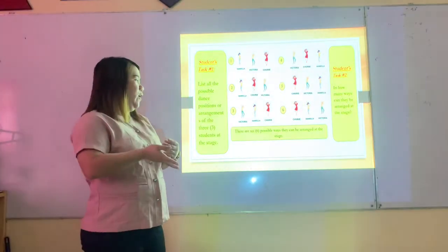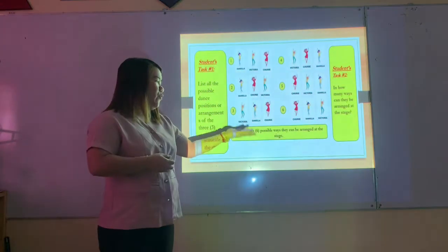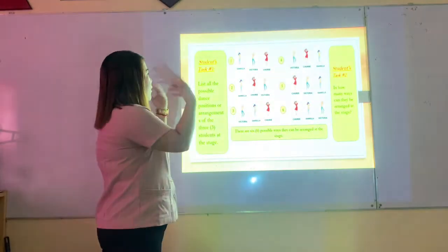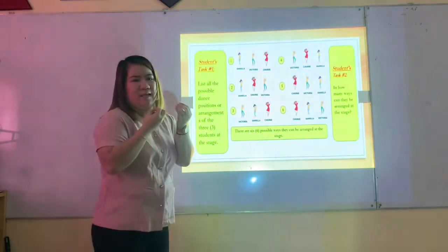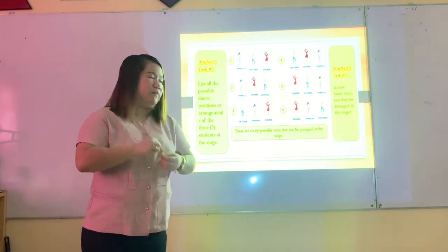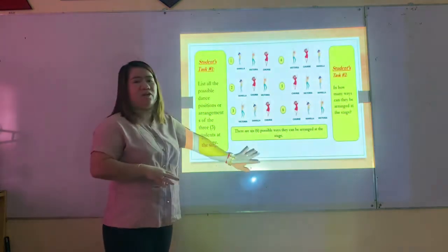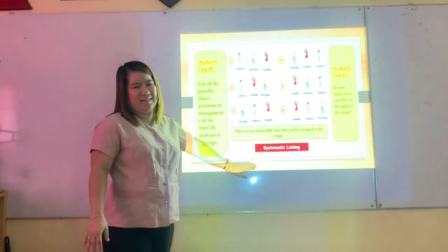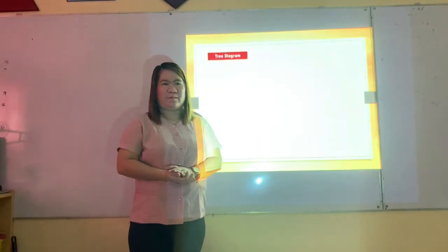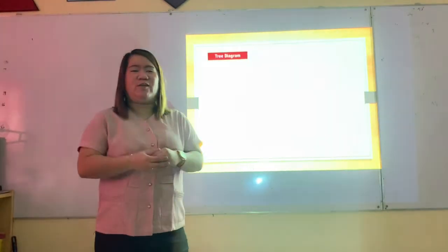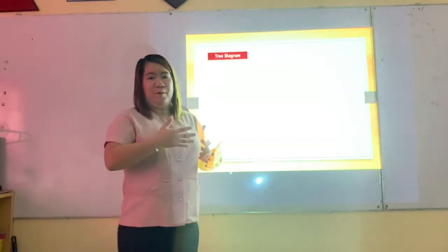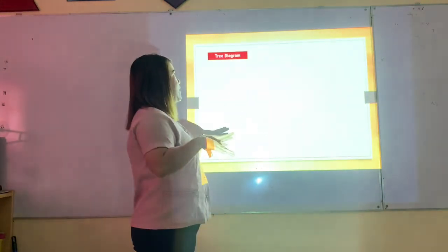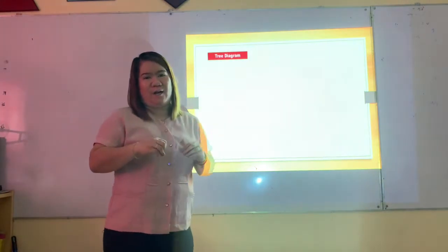All in all, we have six possible ways they can be arranged at the stage. This process is called systematic listing. Let's now solve the same problem using a different process: tree diagrams.